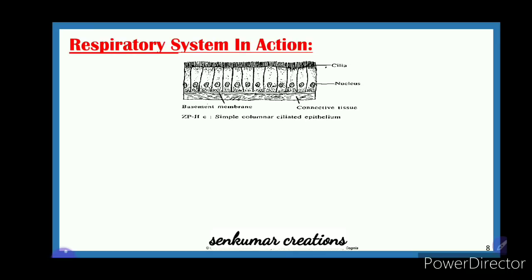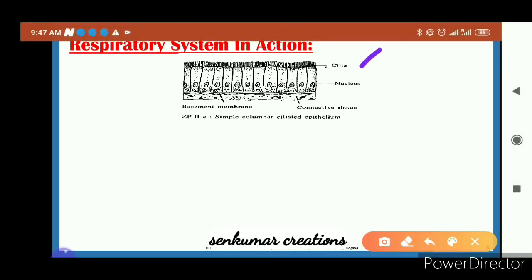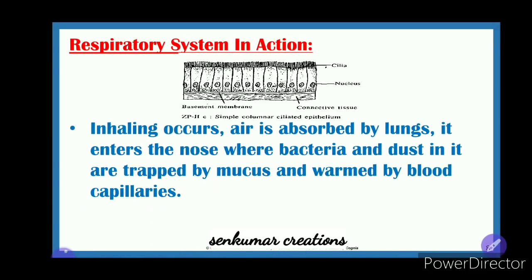The trachea contains ciliated epithelium — cilia — which are hair-like structures that push mucus toward the throat or nose. When inhaling, air enters the nose where bacteria and dust are trapped by mucus and the air is warmed by blood capillaries. Two main functions happen in the cilia: it traps bacteria and dust particles, and due to blood capillaries, it warms the air before it reaches the lungs.